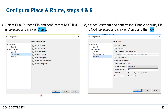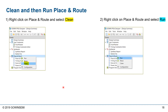Next, make sure that Dual Purpose Pins is not selected for this project. For the bitstream settings, we want to disable the security bit — make sure Enable Security Bit is turned off. Click Apply and then OK. Now we're ready to place and route: right-click on Place and Route, clean any intermediate files, and then right-click and select Run.